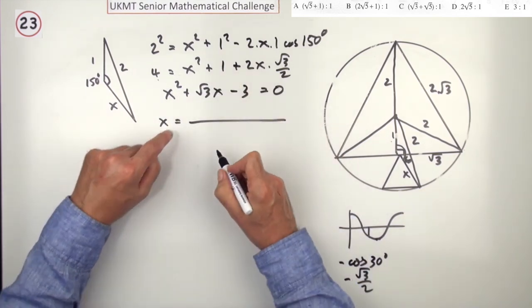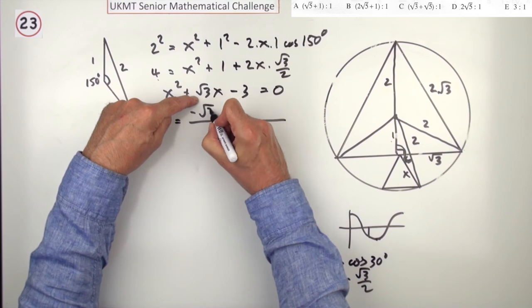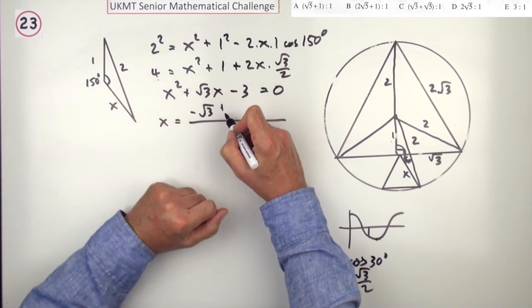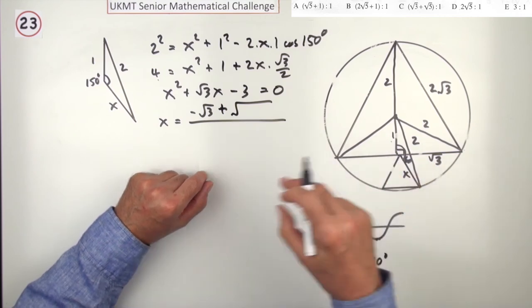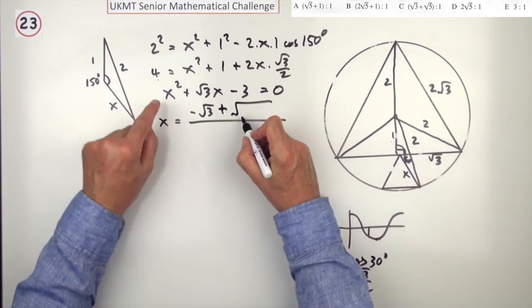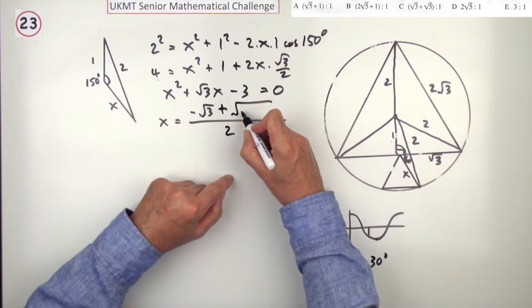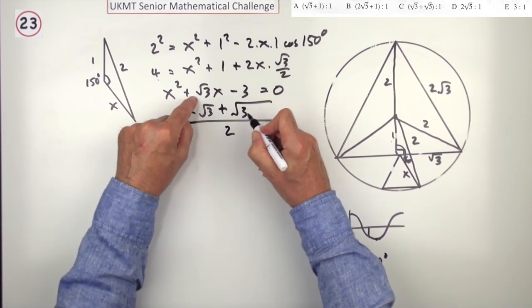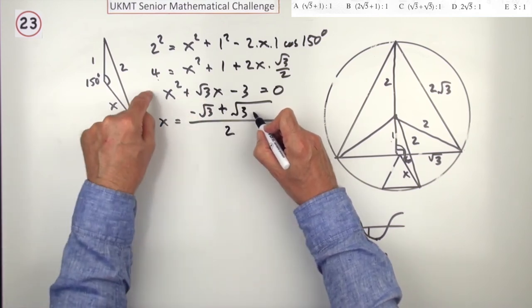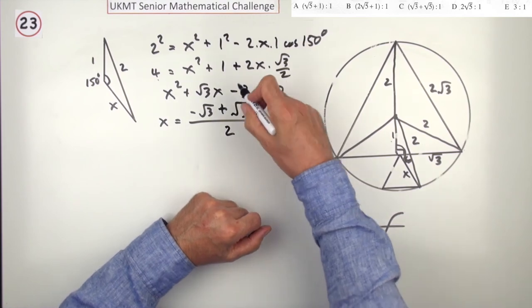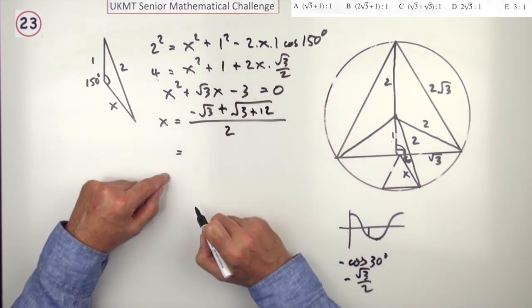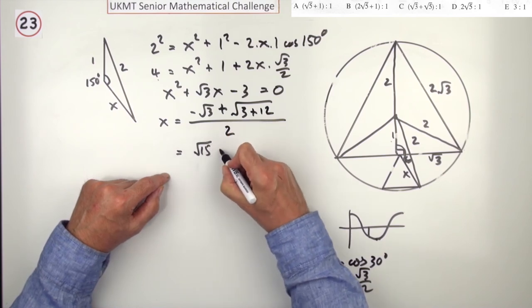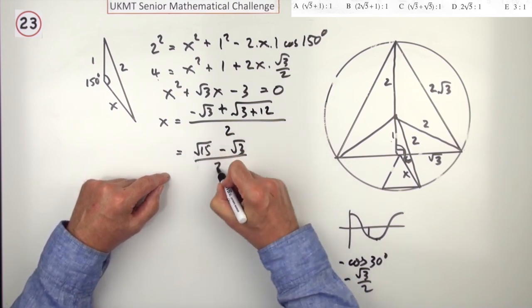x equals negative of b, so that's negative root 3, plus or minus—well, there's no point in having the minus, so I'll just stick with the plus, because I know that x is a positive amount—all over 2 times a, so over 2. That's about b squared, so that's 3 minus 4ac, but that's negative, so again that goes to a plus, and 4 times 3 is 12. So that's root 15, so you've got root 15 minus root 3 upon 2.